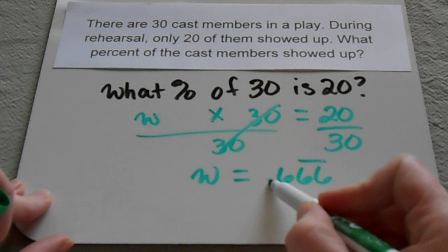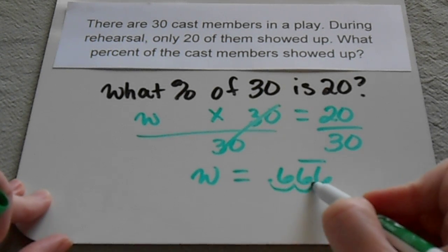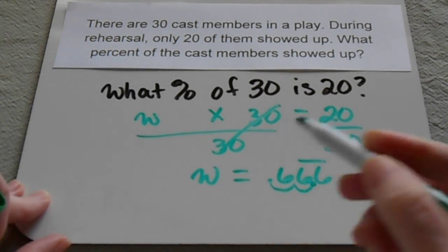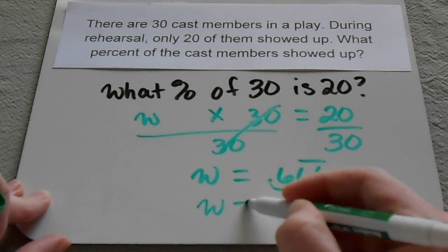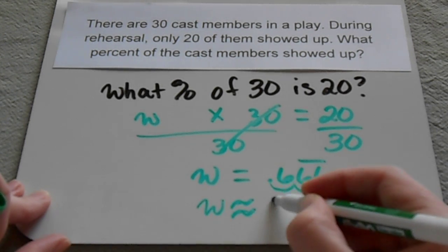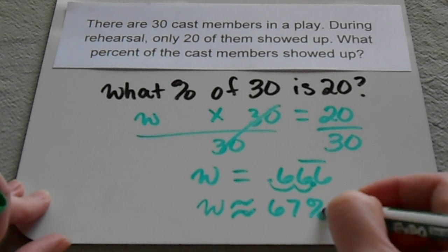Since this is a decimal, I have to move that decimal back over to the right to turn it into a percent. So my w equals about 67%.